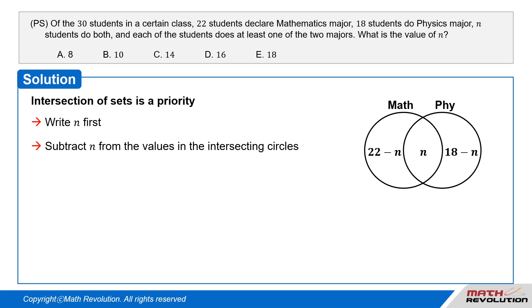Then, subtract n from the values in the intersecting circles. Thus, 22 minus n plus n plus 18 minus n equals 30. Simplifying, 22 plus 18 minus n is 30. And so, we get n is 40 minus 30, which is equal to 10.